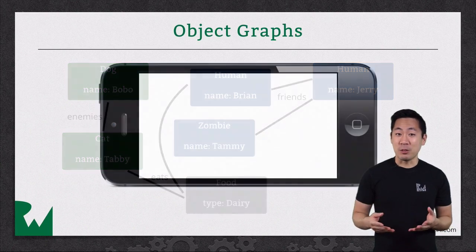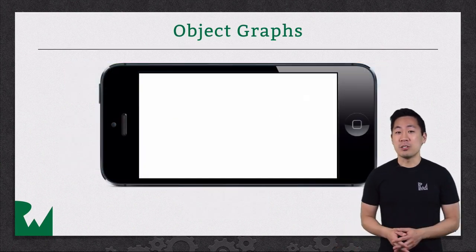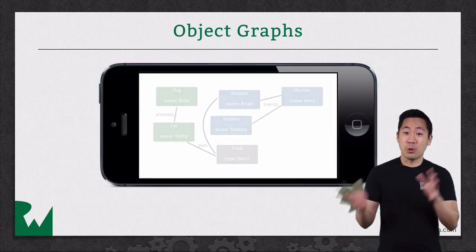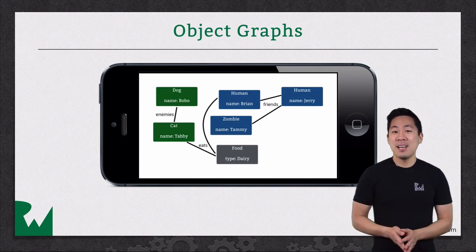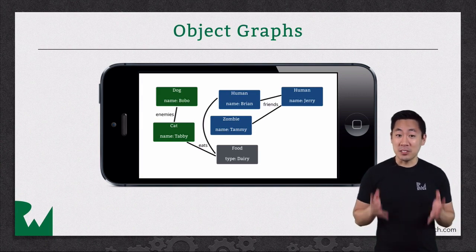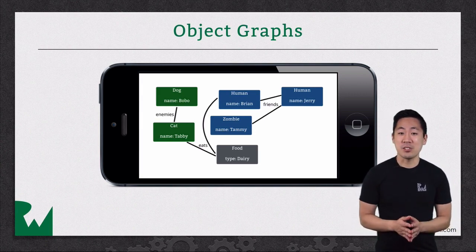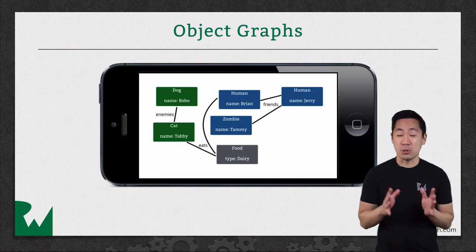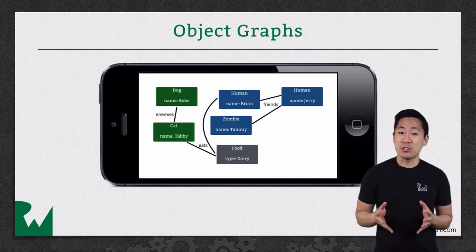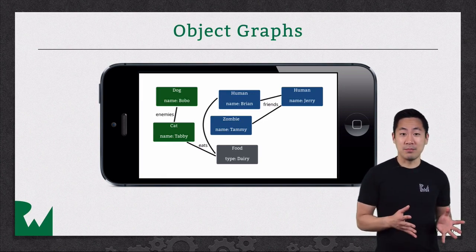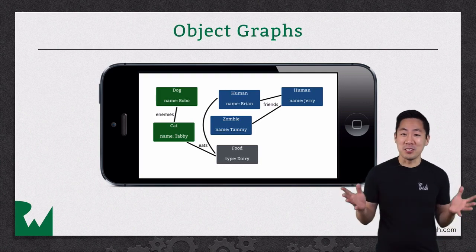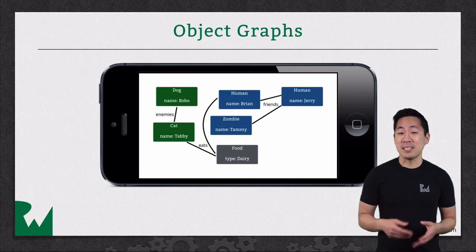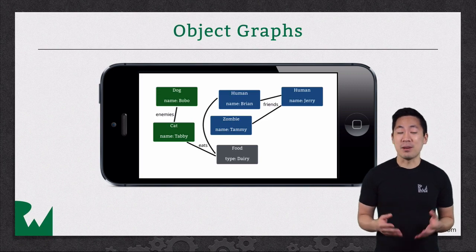Then later on, when your app restarts, you would want to somehow restore that snapshot and return all those objects to life. That's the persistence part. CoreData makes sure your objects are stored away safely, and is also smart about retrieving your data. You could have an enormous object graph with millions of objects, but CoreData will only load and instantiate them as needed.